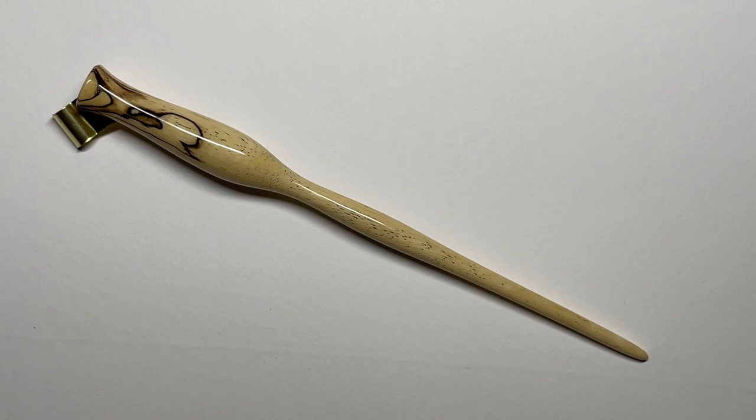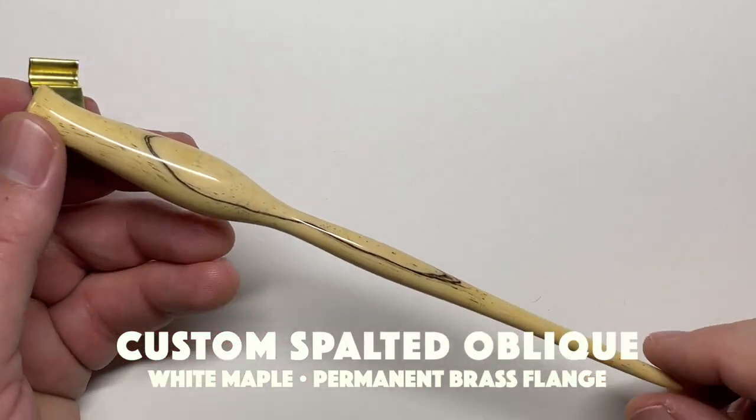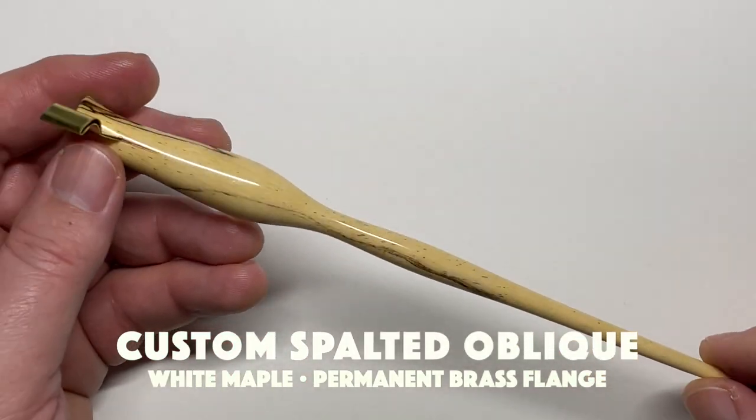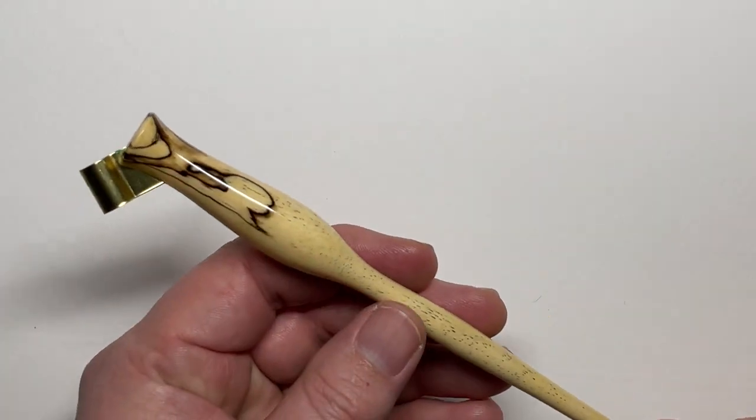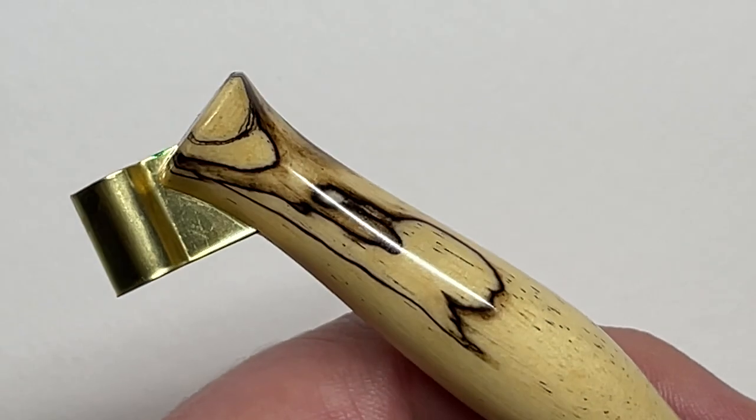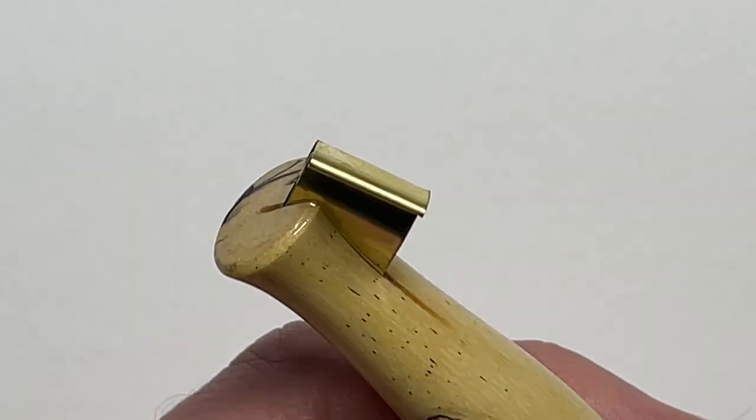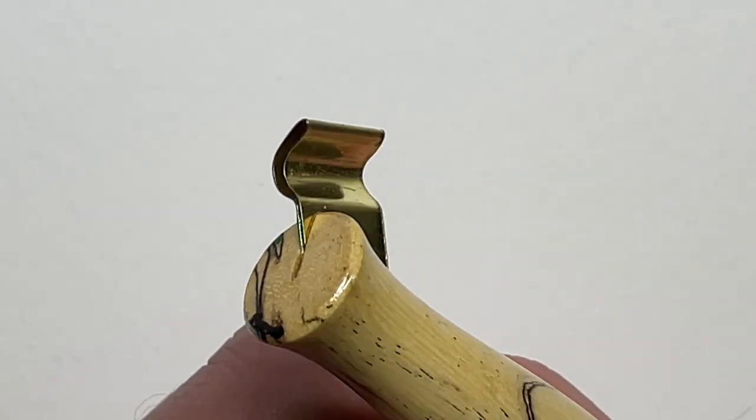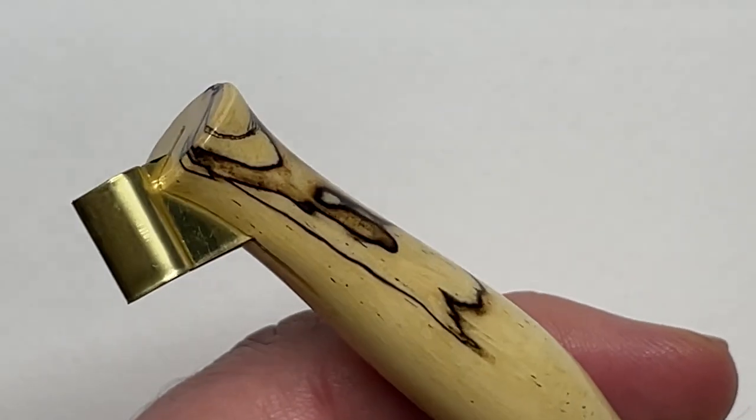Eventually a couple years later I bought this one here. This is a spalted maple, a spalted white maple oblique pen, and I just fell in love with it. You can see the markings on this, it's just a gorgeous piece of work and it's a piece of art all on its own. The flange again is fixed, it's glued in there and doesn't come out.